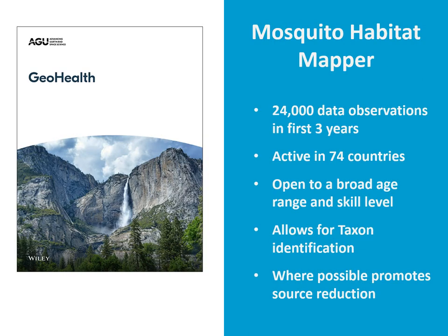Connecting to the United Nations Sustainable Development Goals — here are details from a paper approved for publication in GeoHealth on the use of the mosquito habitat mapper. In the first three years since the app launched, there have been around 24,000 data observations across 74 countries, demonstrating that the app is open to a broad range of skill levels and ages. The ability to identify larvae allows for taxon identification, which is useful for researchers studying mosquito habitats. NASA is also working on developing AI using satellite images to predict when vector-borne disease outbreaks may occur.